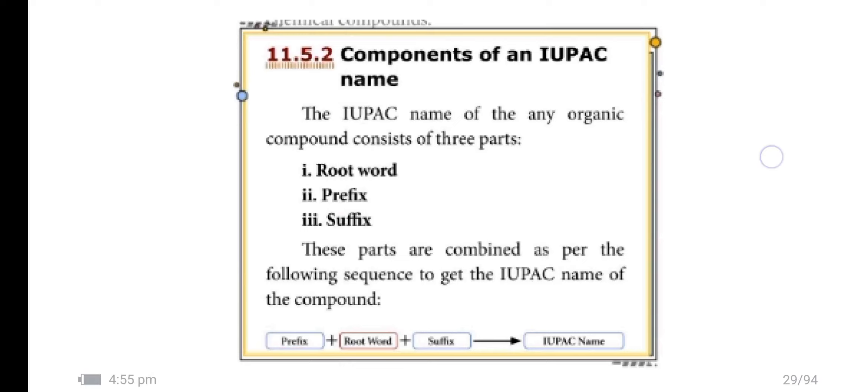The IUPAC name of any organic compound consists of three parts: root word, prefix and suffix. These parts are combined as per the following sequence to get the IUPAC name of the compound: prefix, then root word, then suffix.